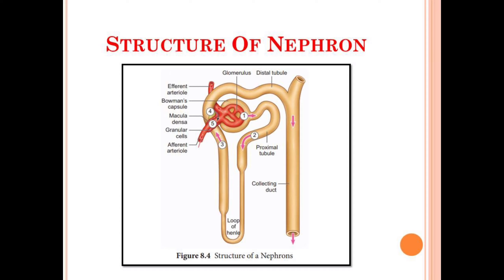To recap: each nephron consists of the glomerulus, and fluid from the glomerulus passes to Bowman's capsule. The fluid then moves to the proximal tubule, which has two portions — the proximal convoluted portion and the proximal straight portion. From the proximal tubule, the fluid flows into the limbs of the loop of Henle present in the medulla, and this loop consists of the ascending and the descending limb.